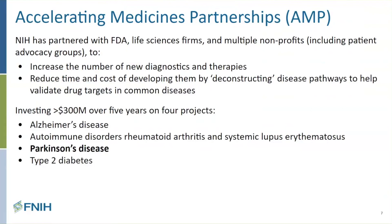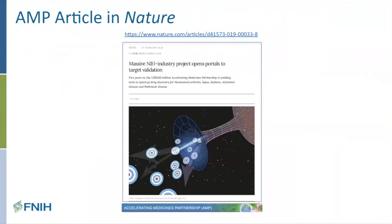NIH has committed to investing over 300 million dollars over five years on four projects. There's an AMP for Alzheimer's disease, an AMP for autoimmune disorders like rheumatoid arthritis and systemic lupus, an AMP on Parkinson's disease — which is the one we'll be talking about today — and an AMP for type 2 diabetes. There is also an article that came out last March which goes into more detail on the AMPs for those who are interested.